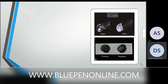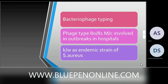For bacteriophage typing, phage type 80/81 is most commonly involved in hospital outbreaks and is known as the endemic strain of staph aureus. They may ask which phage type causes hospital-acquired staph aureus infections — it is the 80/81 type.